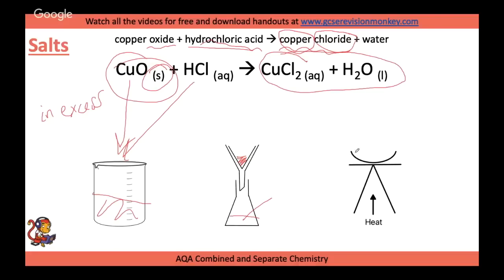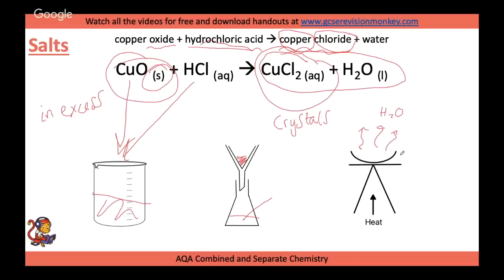You then need to heat that up over a Bunsen burner with a tripod and gauze in an evaporating dish. The important thing is you only want some of the water to evaporate — you don't want it to go completely dry, otherwise you will not make crystals. Heat it until some water has evaporated, then take it off and leave it to cool slowly, and you will get lovely crystals forming.